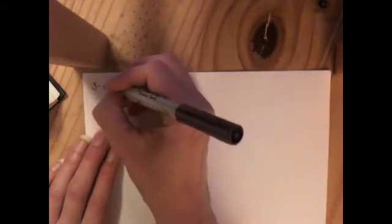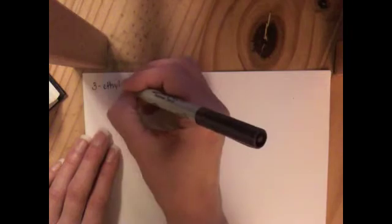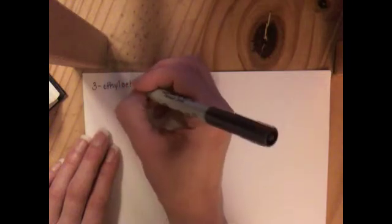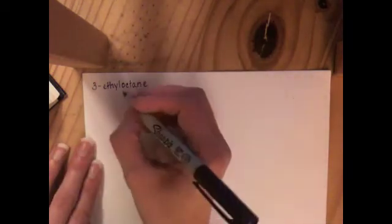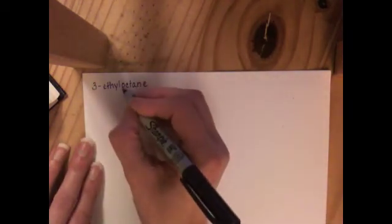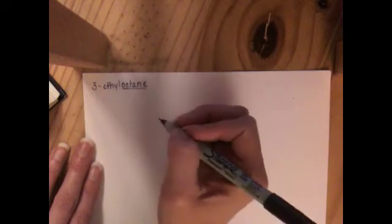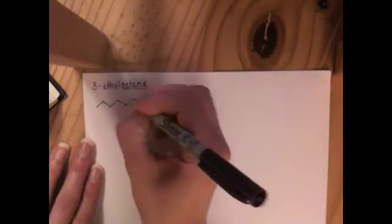The first example that we're going to do is 3-ethyloctane. So whenever you draw the structure from the name, the easiest way to do it is start by drawing the name of the parent alkane. This is an octane. We've got 1, 2, 3, 4, 5, 6, 7, 8 carbons, and then we want to put an ethyl group on carbon number 3.